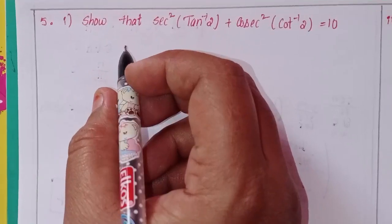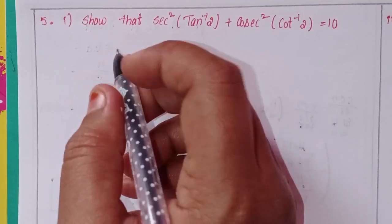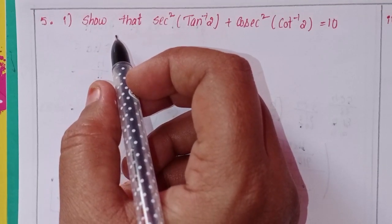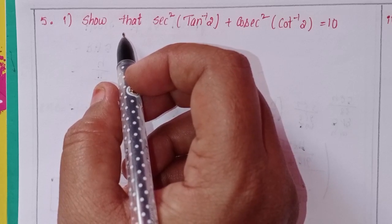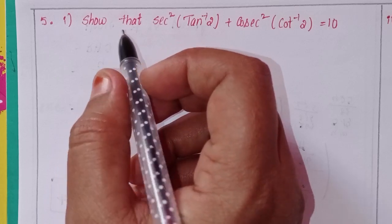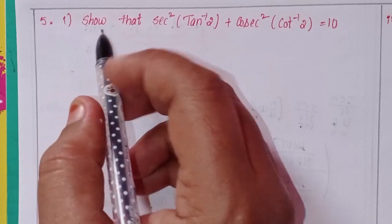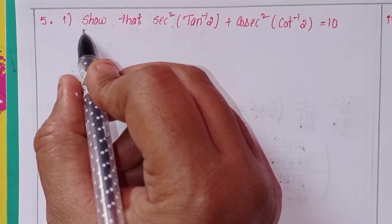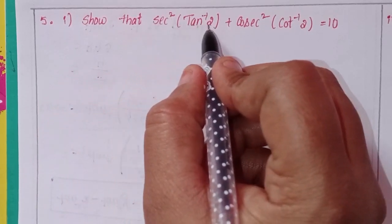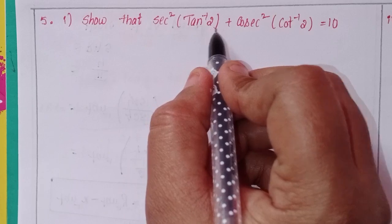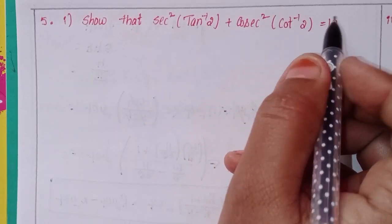Hi viewers, this is Shaheen and welcome to my channel. Today we will discuss Intermediate first year, Chapter 8, Inverse Trigonometric Functions, Exercise 8a, second Roman numeral, fifth problem. The first one: show that sec²(tan⁻¹2) + csc²(cot⁻¹2) = 10.